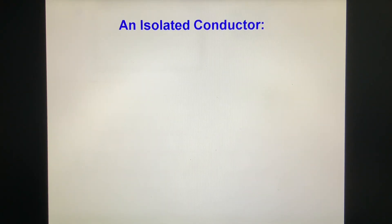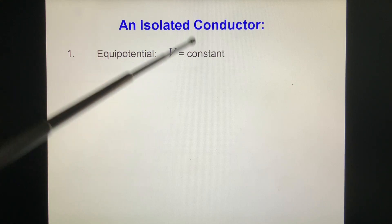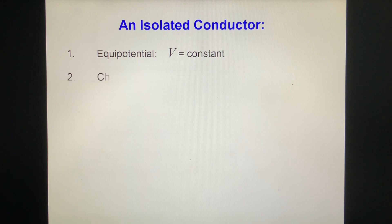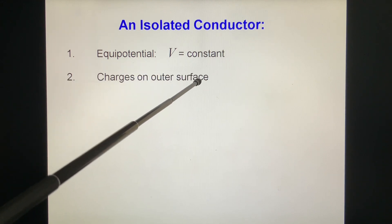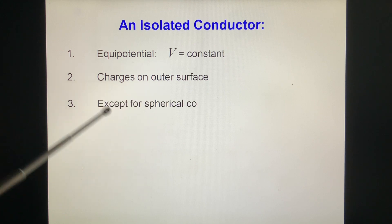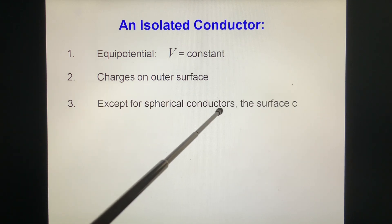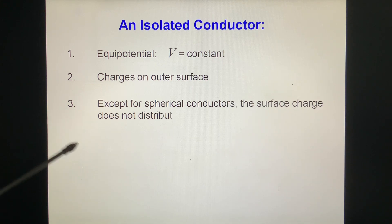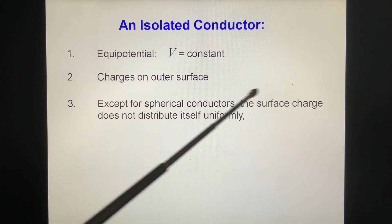An isolated conductor has the following properties. One, equipotential, V is constant. Two, charges on outer surface, not inside. Three, except spherical conductors, the surface charge does not distribute itself uniformly. It's not uniform.